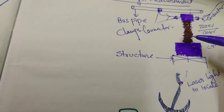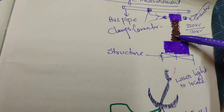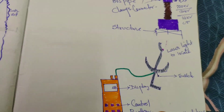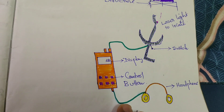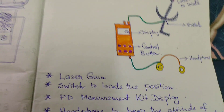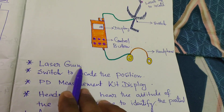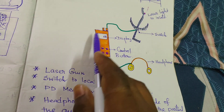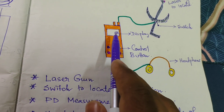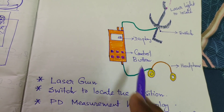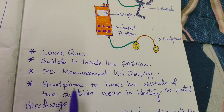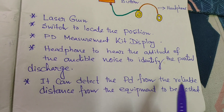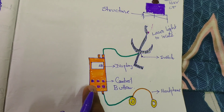That will decrease your revenues, damage your properties, and may harm your working personnel across the switchyard. So you have to identify it by help of this PD machine. The partial discharge kit consists of: a laser gun switch to locate the position, the PD measurement kit and display showing how many decibels of noise you are finding, and headphones to hear the audible noise to identify partial discharge. It can detect PD from a reliable distance from the equipment to be tested.